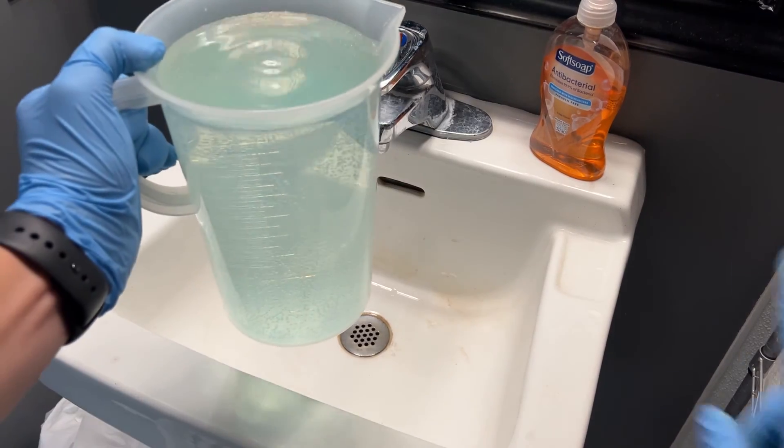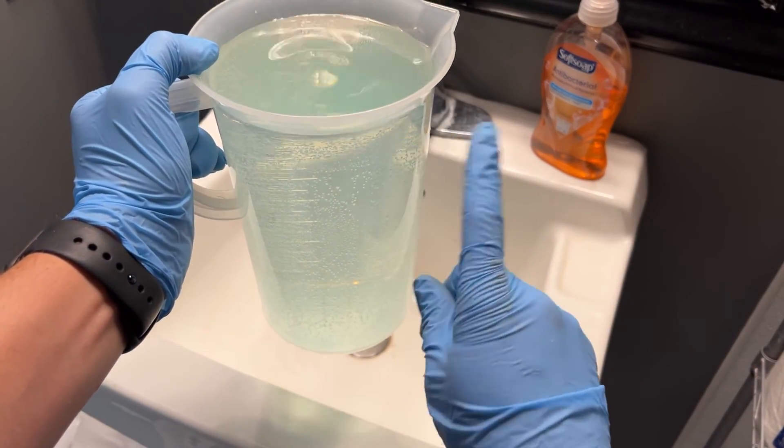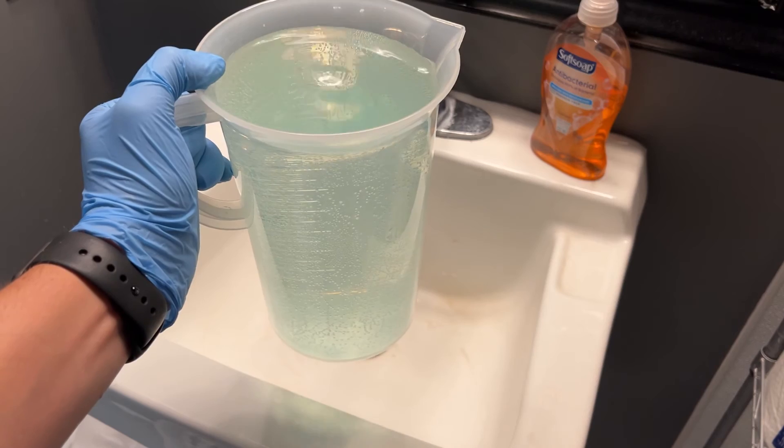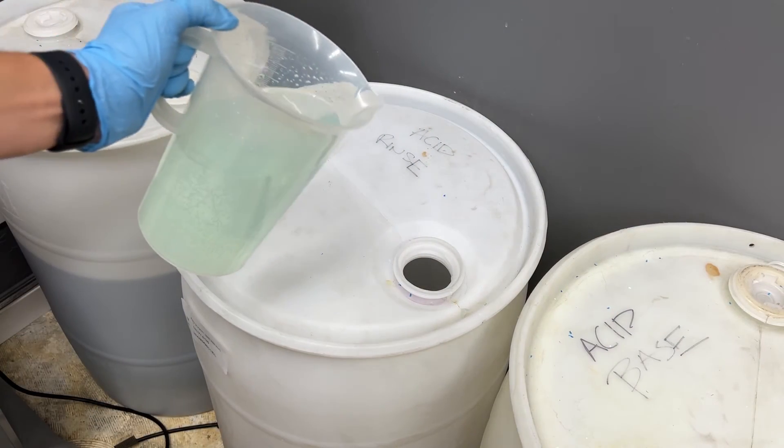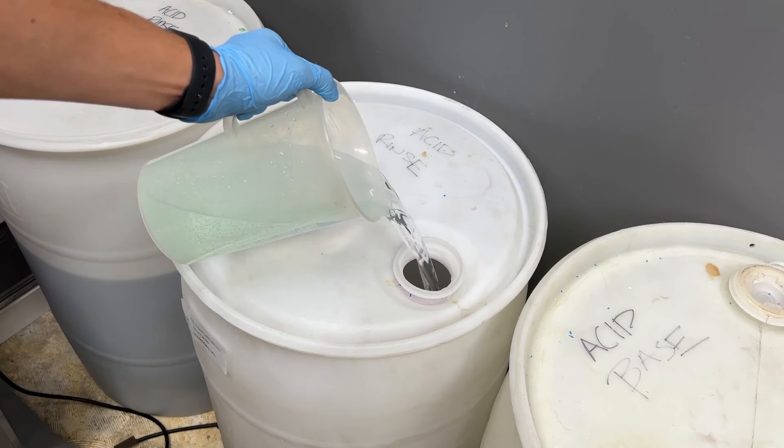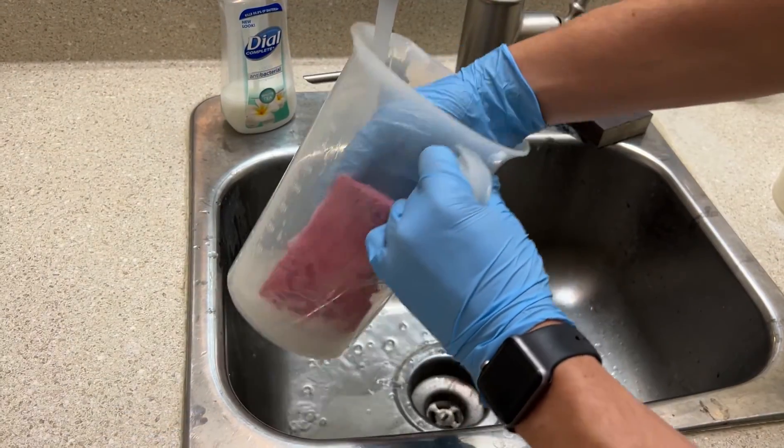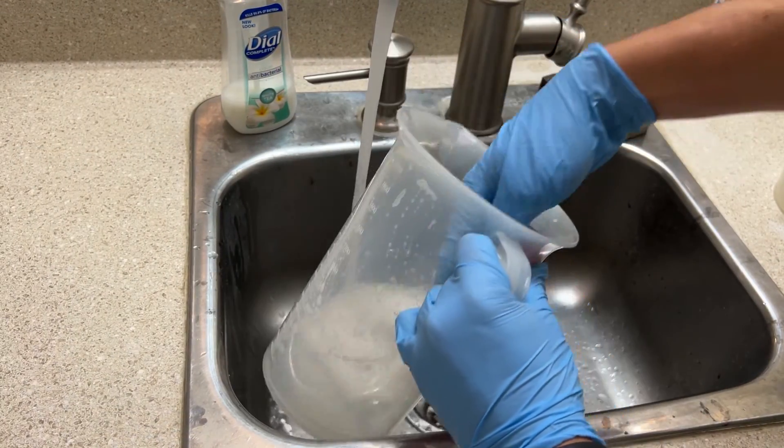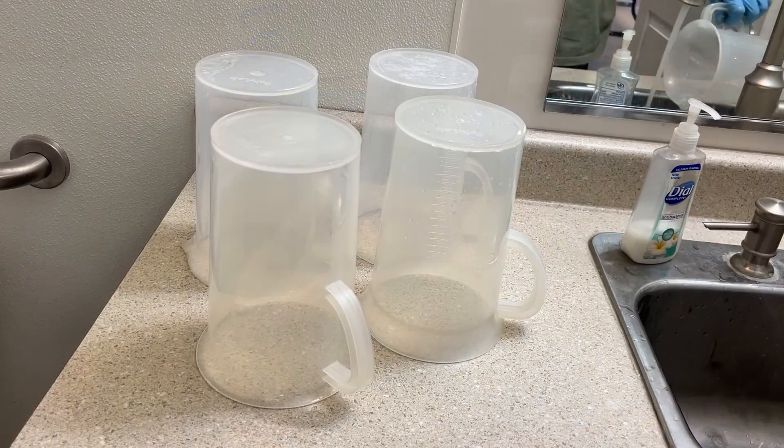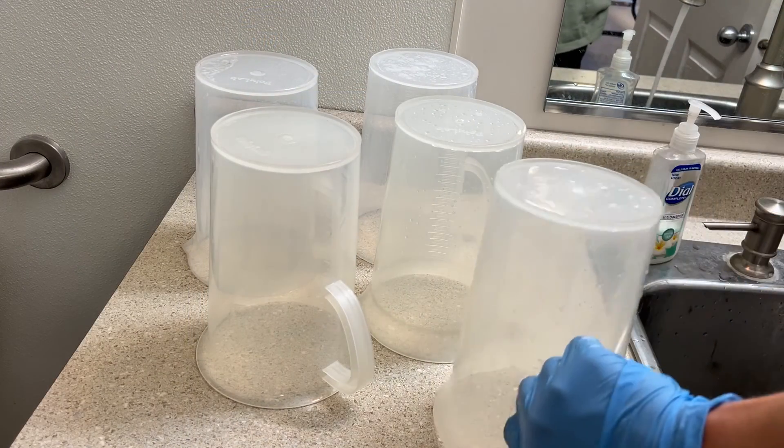Rinse water and old solutions cannot be poured down the drain. There are area specific regulations for the disposal of these chemicals. Please contact your local waste management for more details. After disposing of rinse water make sure to scrub the rinse beakers with dish soap rinse well and allow them to dry between uses.